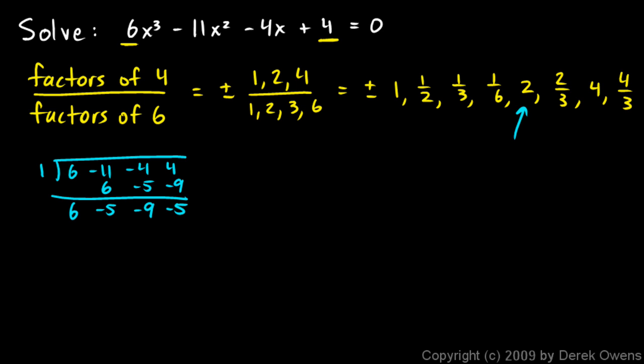So let's try the 2 next. We could try the 1 half next, but I think it's nice to skip the fractions, at least at first. See if one of these integer values works first, just because the integers are a little bit easier to check with the synthetic division here. So 6, negative 11, negative 4, and 4. Bring down the 6. 6 times 2 is 12, and we add and we get 1. 1 times 2 is 2, and we add and we get negative 2. Negative 2 times 2 is negative 4, and we add and we get 0. So that did it.